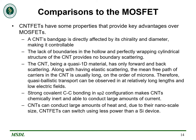Let's go over some advantages of a CNT-FET over a MOSFET. The carbon nanotube can only have forward and back scattering. This, along with elastic scattering, means carriers have a long mean-free path, allowing transport along relatively long lengths at low electric fields. Carbon nanotubes are chemically inert due to sp2 carbon-carbon bonding, allowing for large amounts of current. CNT-FETs can switch using much less power than silicon-based devices due to their ability to conduct large amounts of heat and their nanoscale size.